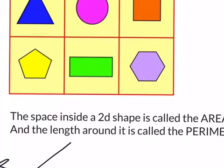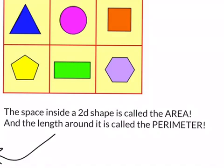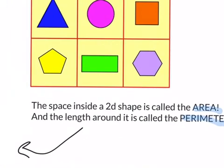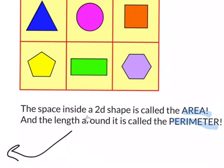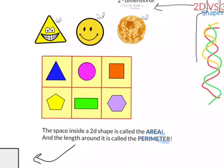And also, some vocabulary, some mathematical vocabulary you might see, it's area and perimeter. Well, actually, the space inside a 2D shape is called the area, and the length around it, it's called the perimeter. So area and perimeter, they both specifically apply to 2D shapes, so that's great.